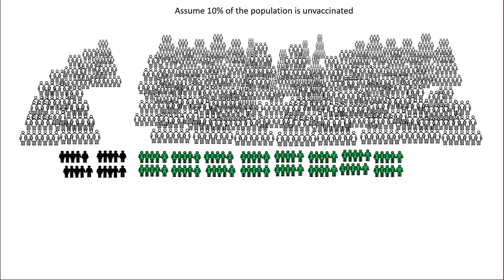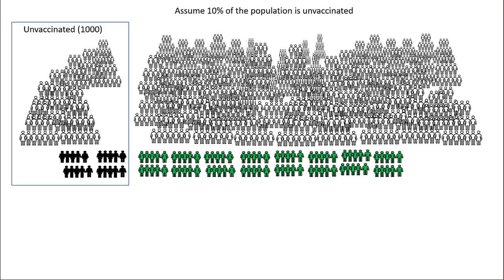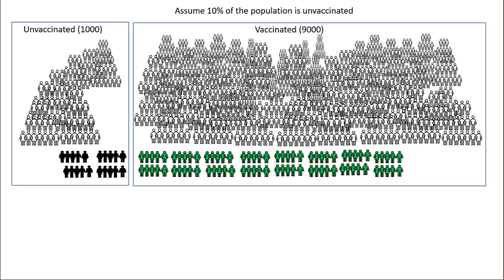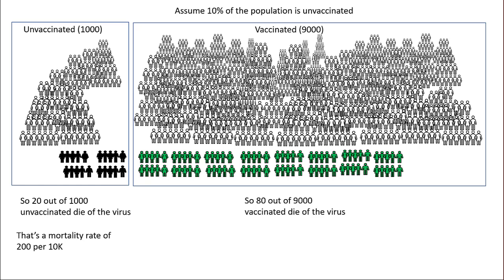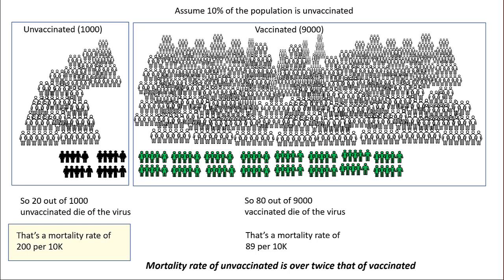Let's assume 10% of the population is unvaccinated — that's 1,000 unvaccinated and 9,000 vaccinated. So 20 out of 1,000 unvaccinated die of the virus: a mortality rate of 200 per 10K. And 80 out of 9,000 vaccinated die: a mortality rate of 89 per 10K. So the mortality rate of the unvaccinated is over twice that of the vaccinated.